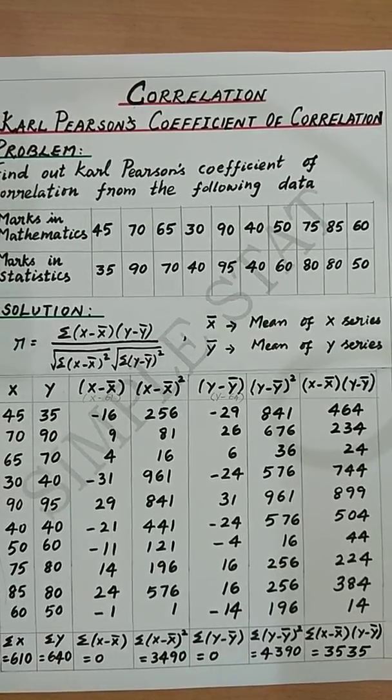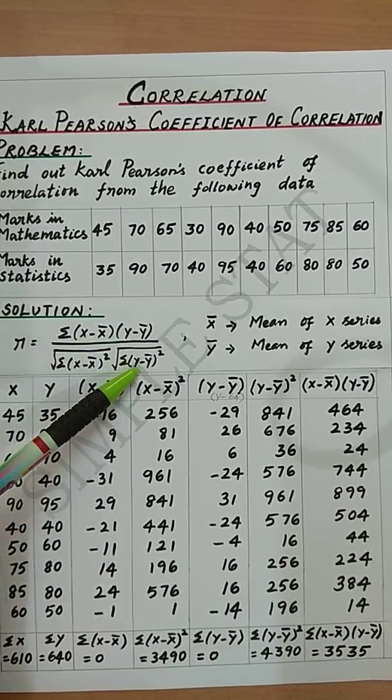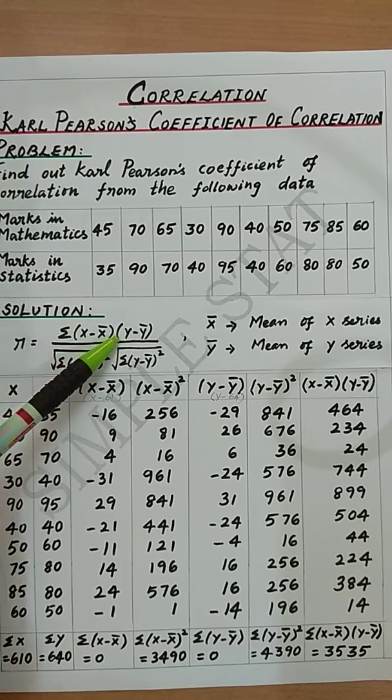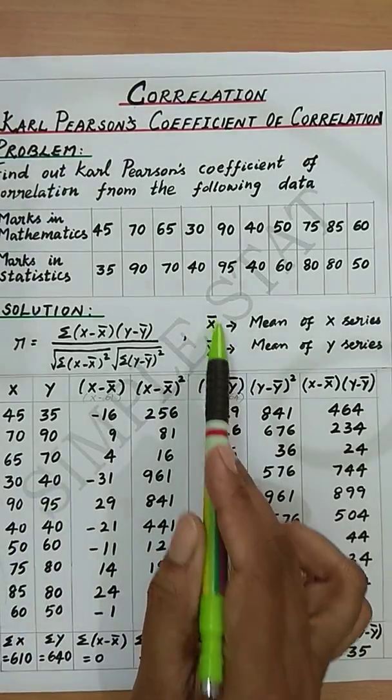Now according to the formula we need x minus x bar, y minus y bar, x minus x bar whole square, y minus y bar whole square, and x minus x bar into y minus y bar. Therefore the first step is to find out x bar and y bar.